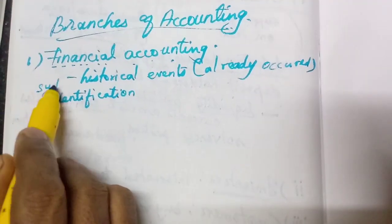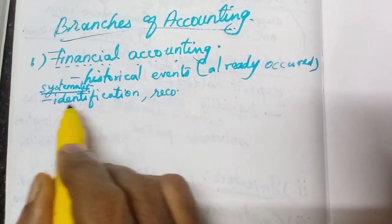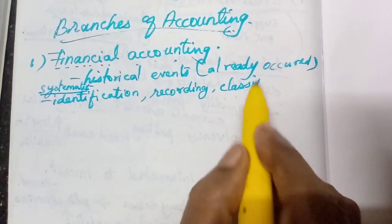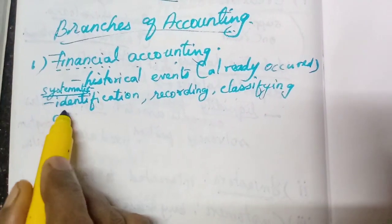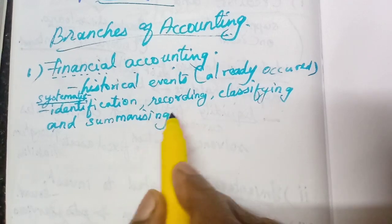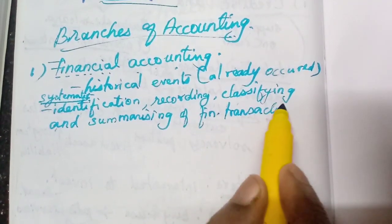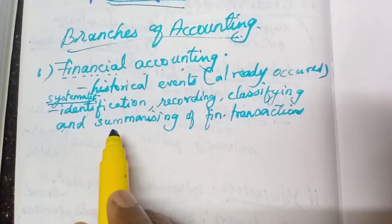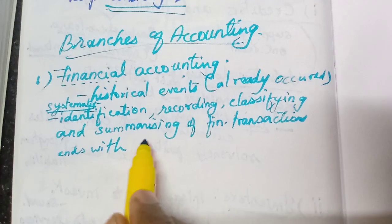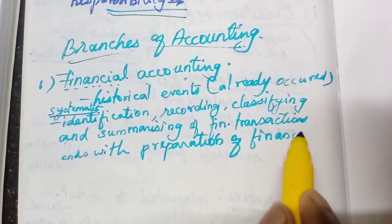Financial accounting starts with identification of transactions in a systematic way. First, they identify the transactions; then they record them in the books of accounts; then they classify them into ledger accounts. The balances of ledger accounts are summarized in the trial balance. It then proceeds to the preparation of financial statements.